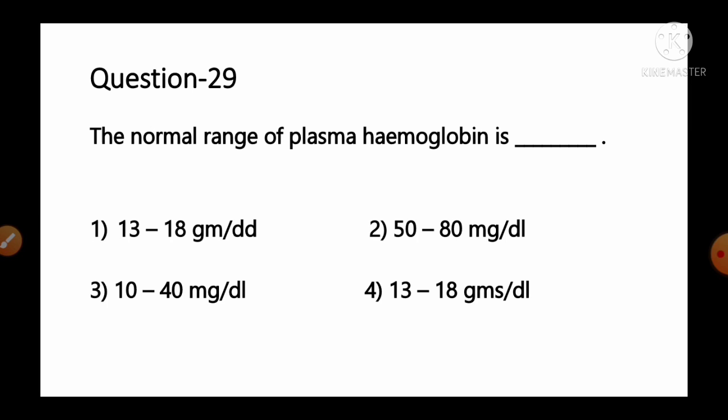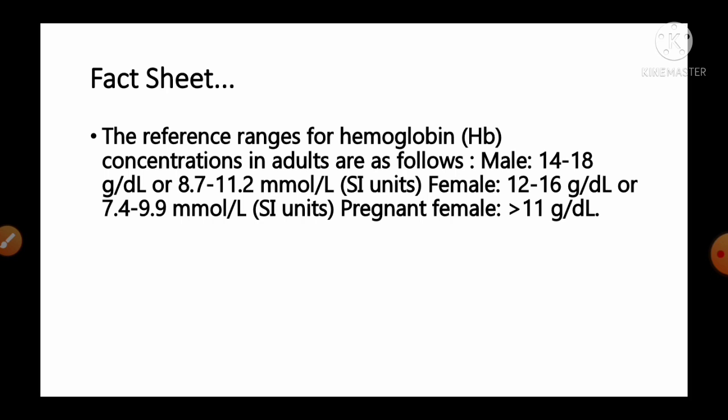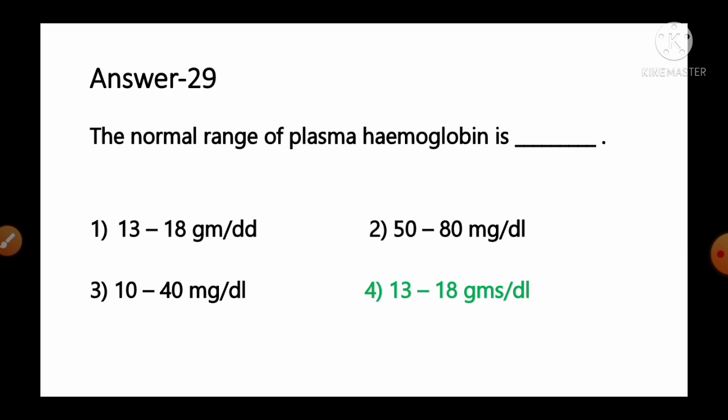Question number 29: The normal range of hemoglobin is — options: 1) 13–18 g/dL, 2) 50–80 mg/dL, 3) 10–40 mg/dL, 4) 13–18 mg/dL. The reference range for hemoglobin concentration in adults: males 14–18 g/dL, females 12–16 g/dL, and pregnant females greater than 11 g/dL. The normal range is 13–18 grams per deciliter. So option number 4, 13–18 mg/dL, is the correct answer (noting the unit should be g/dL).